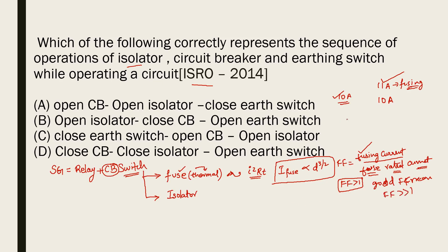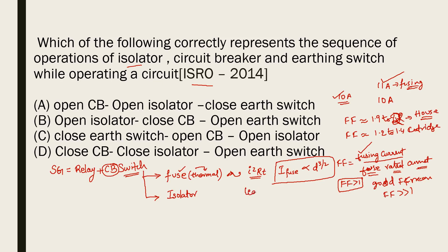For normal fuses used in house wiring applications, the fusing factor is around 1.9 to 2. For high-capacity fuses such as cartridge fuses, the fusing factor is around 1.2 to 1.4. The fusing element material commonly used is a combination of lead and tin — lead 63% and tin 37%. By varying the percentage of lead, we can vary the capacity or fusing current of the fuse.